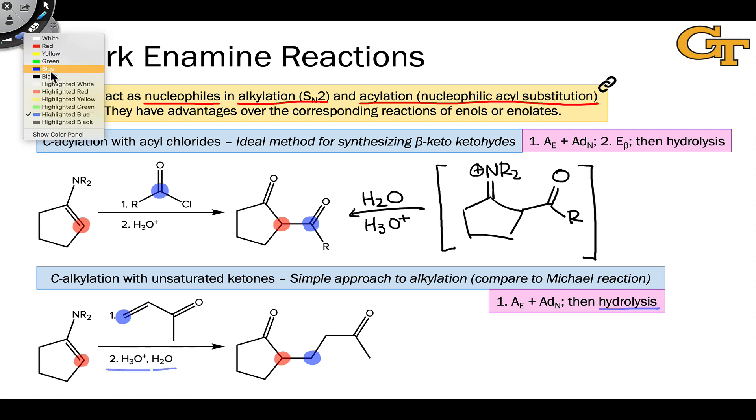Before we run these reactions, of course, we have to form the enamine from the corresponding carbonyl compound. Here, that would be cyclopentanone. But the amine we use is also a question. It needs to be secondary so that we get the enamine intermediate selectively rather than an imine. Very commonly, an amine you'll see used here is pyrrolidine.